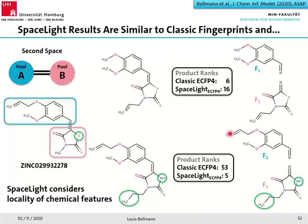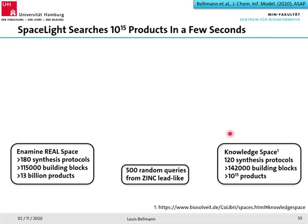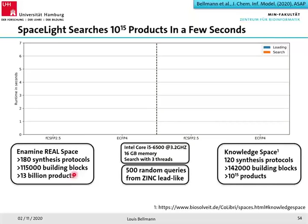Now let me talk about run times. For this experiment we again used 500 random compounds from the ZINC lead-like subset and two different chemical spaces: the full Enamine REAL Space with over 30 billion products, and the Knowledgebase Space with over 10^15 products — five orders of magnitude larger than REAL Space. I used my computer at the university with completely normal specs, similar to what most of you have.